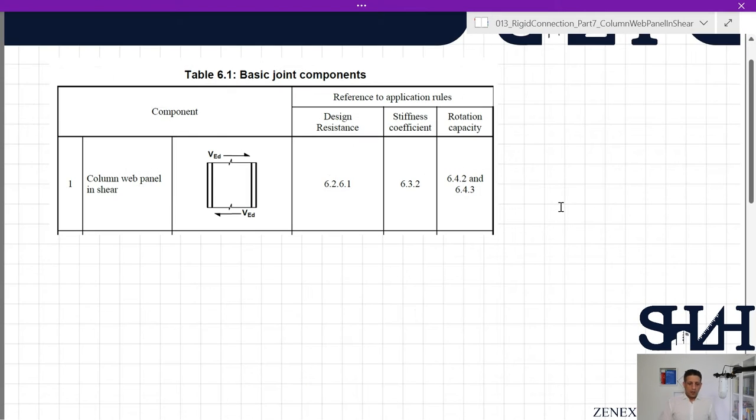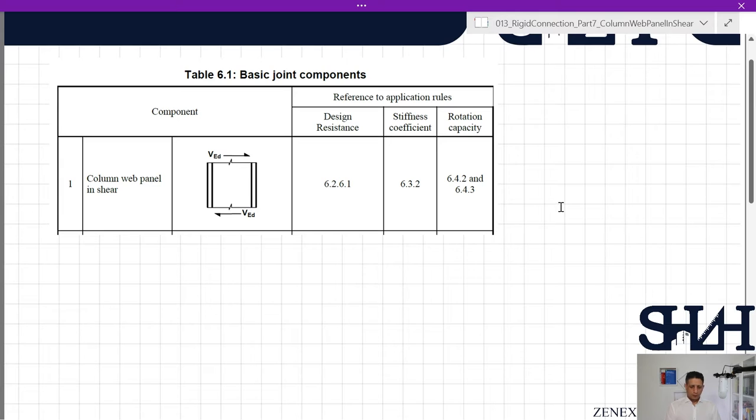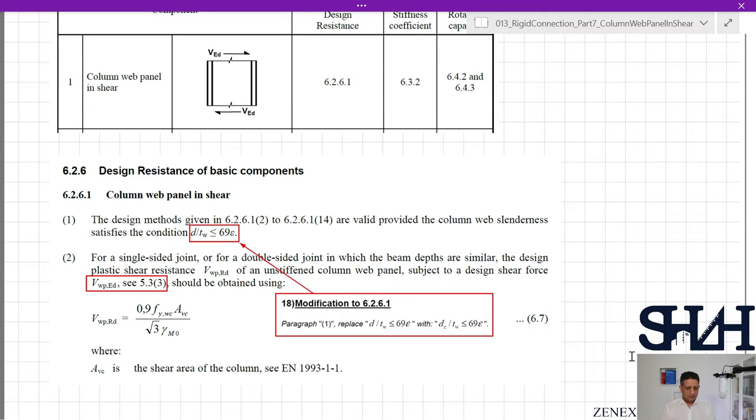The detail is given here as we are familiar with. Now finally we are checking item number one: component is column web panel in shear, and design resistance is given in clause 6.2.6.1. The design methods given in 6.2.6.1.2 are valid provided the column web slenderness satisfies the condition d divided by tw less than 169 epsilon. There is a modification coming in the modified version.